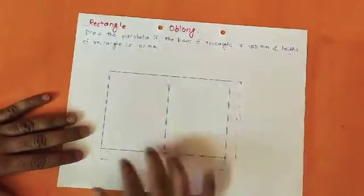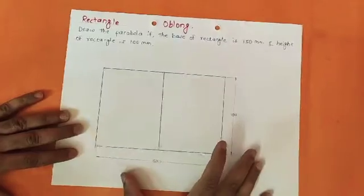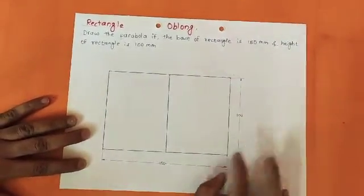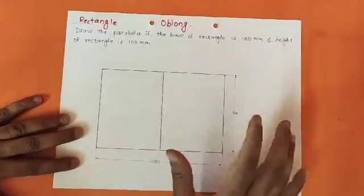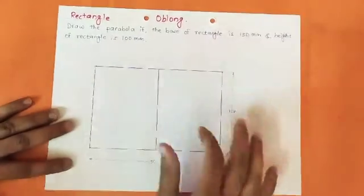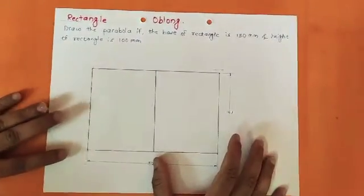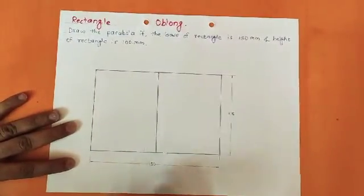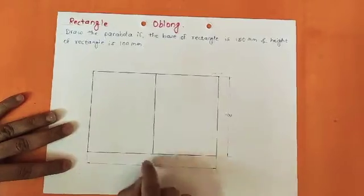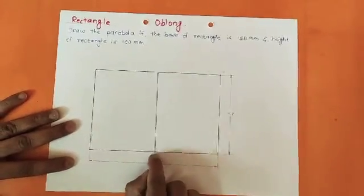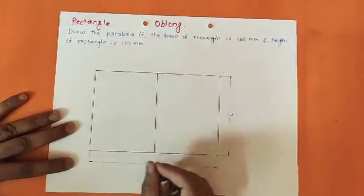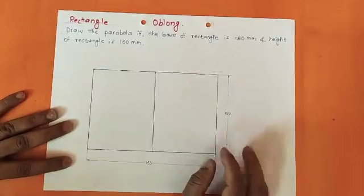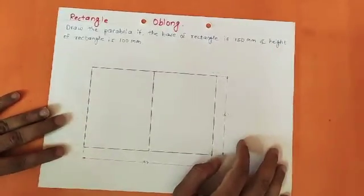I have drawn the basic construction here showing the length and breadth of the rectangle — 150 mm. Once we draw the rectangle, divide it vertically into two equal parts by finding the midpoint of the base line.